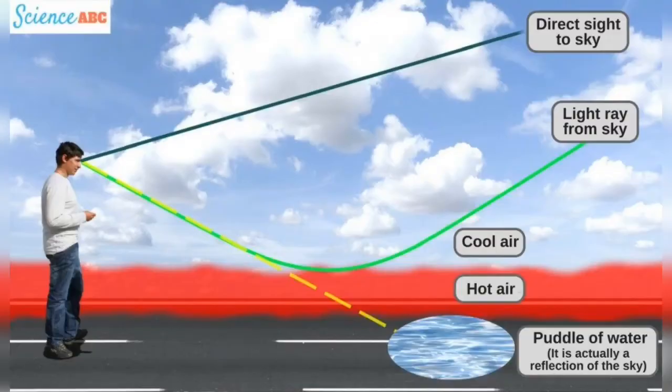Our brain doesn't trace the image of the light from the sun back to its actual path. Instead, it thinks the light has traveled in a straight line.